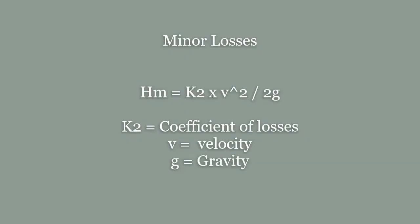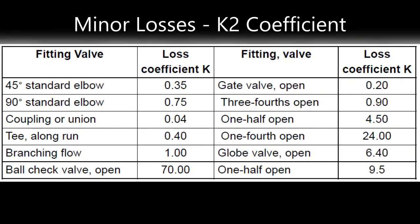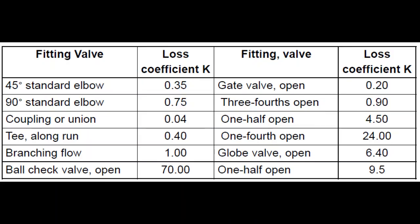Finally, the minor losses, which is the head losses due to fittings, valves and specials can be calculated using the following formula. HM equals K2 times V squared divided by 2 times G. K2 is the coefficient of losses for the fittings, specials or valve. V is the flow velocity and G is the gravity. K2 can be obtained from the design guidelines from the authority or the developer who is having jurisdiction.